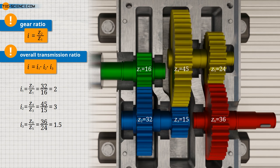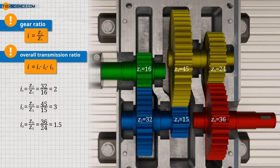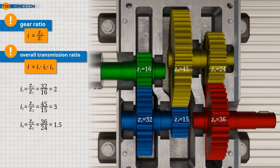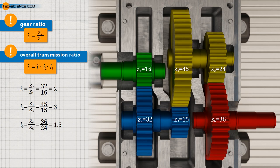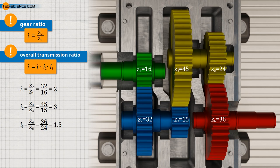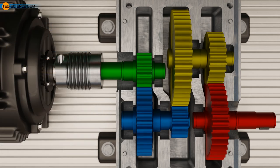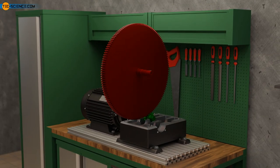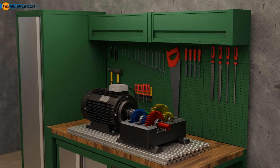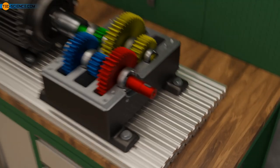The overall transmission ratio of a multi-stage gearbox is the product of the gear ratios of the individual gear stages. Each gear stage has a direct effect on the overall ratio — doubling or tripling the gear ratio of one stage also doubles or triples the overall transmission ratio. The overall ratio of 9 could in principle be achieved with just one gear stage, but the output gear would have to be 9 times larger than the input gear, making the gearbox large and heavy. Multi-stage gearboxes offer the advantage of dividing the required ratio between several smaller gears, keeping overall dimensions small.